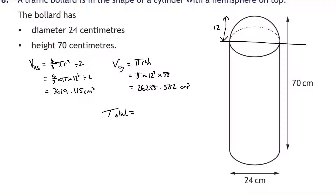Adding the two volumes together: 3619.115 + 26238.582 = 29857.697 cm³. Rounding to three significant figures, we look at the first three digits — 298 — with a 5 after, so it rounds up to 29900 cm³.